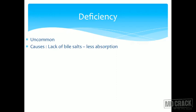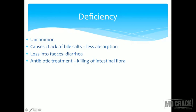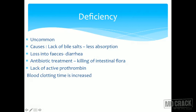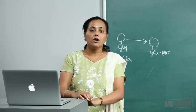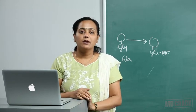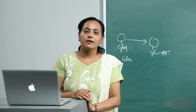Vitamin K deficiency is usually uncommon, primarily because it is synthesized by gut bacteria. Causes include lack of bile salts leading to poor absorption, loss in feces due to diarrhea, or antibiotic treatment killing intestinal flora. These lead to lack of active prothrombin and increased blood clotting time. Importantly, newborns have a sterile gut and mother's milk is deficient in Vitamin K, so Vitamin K injection is recommended for newborns. This concludes the section on Vitamin E and Vitamin K.